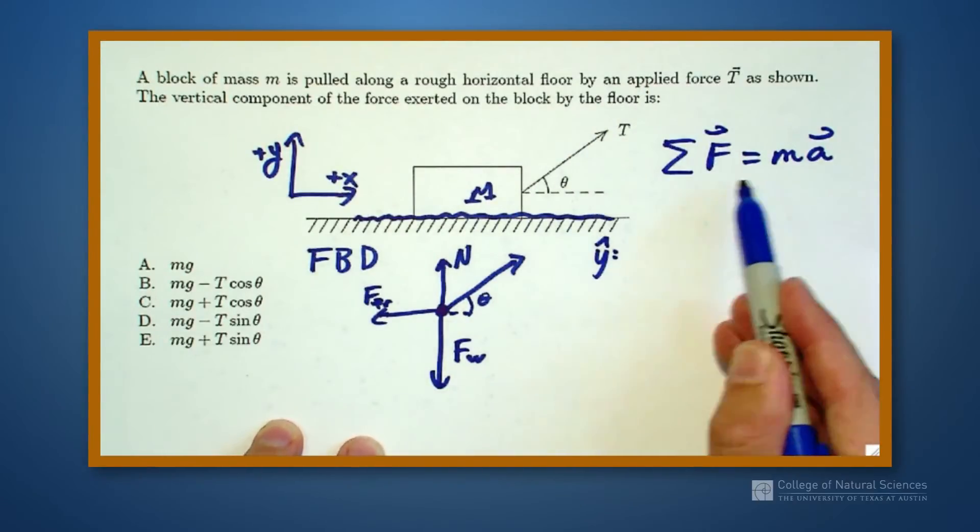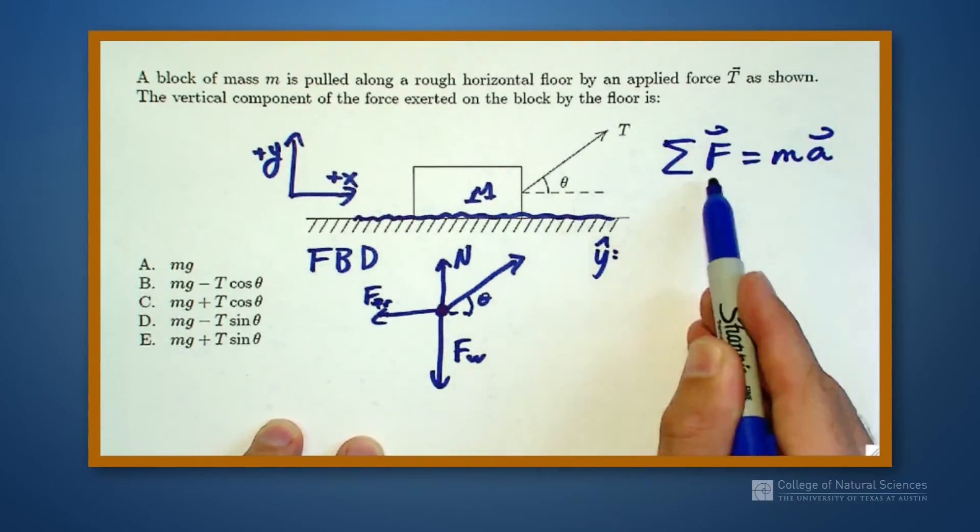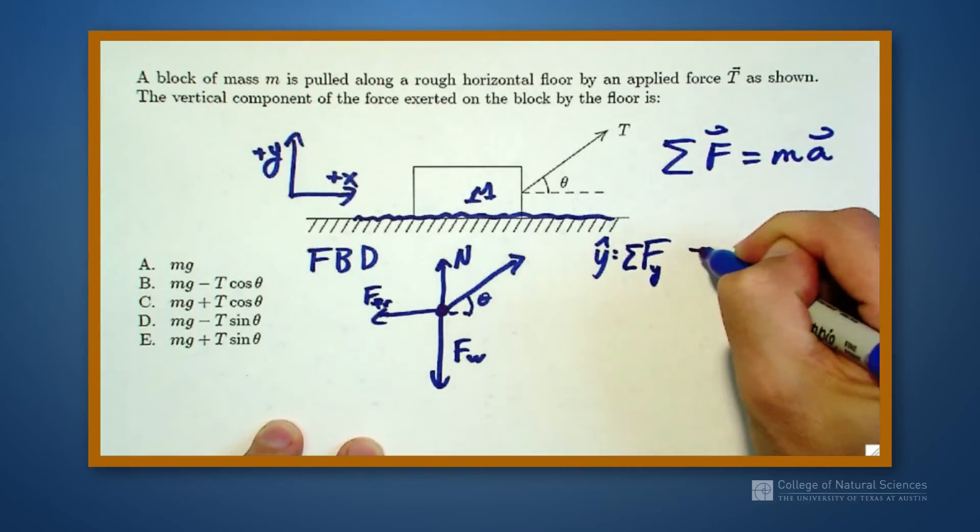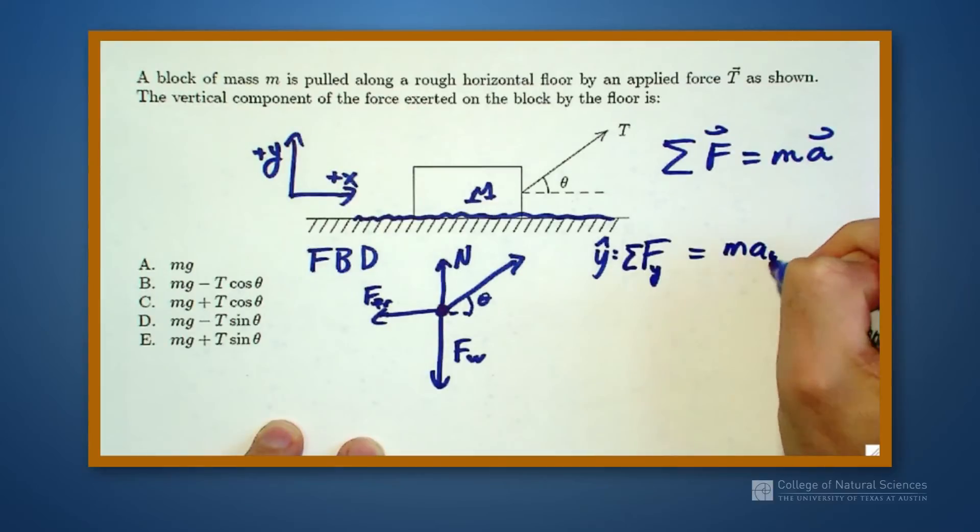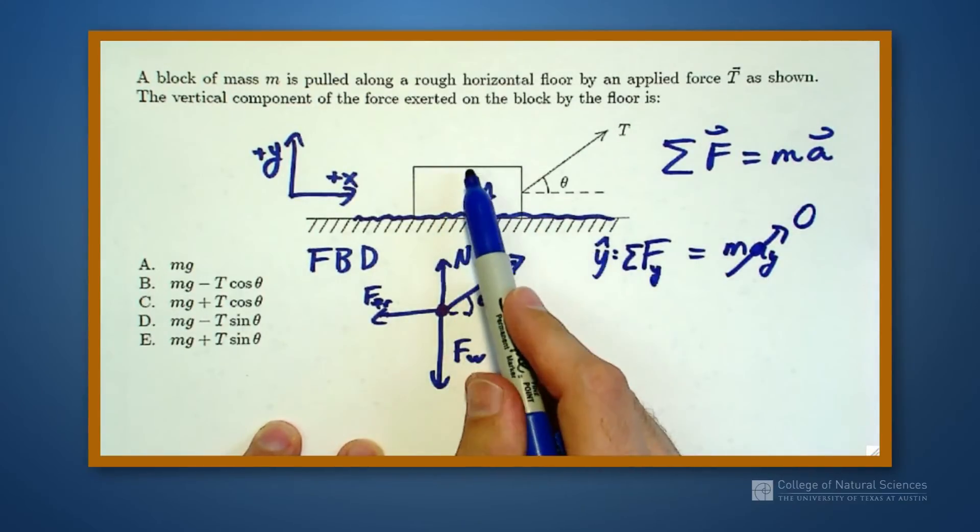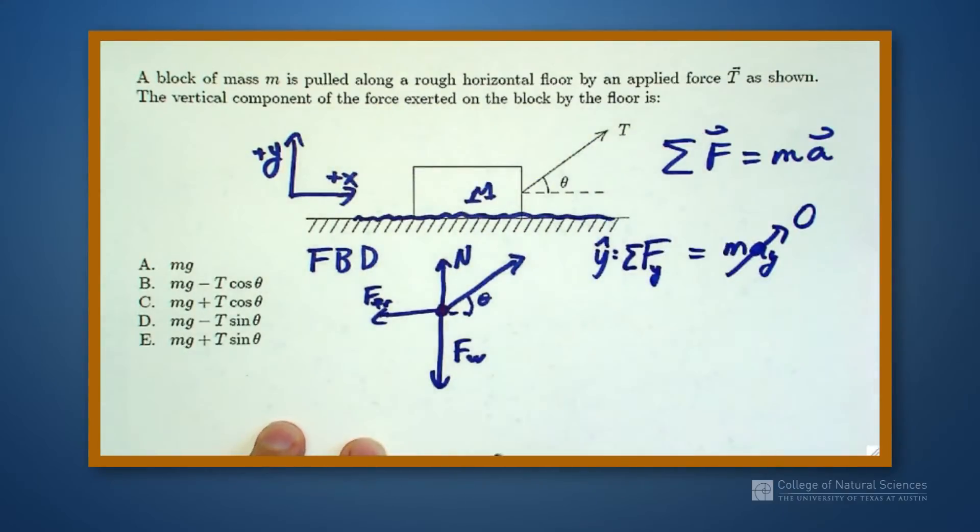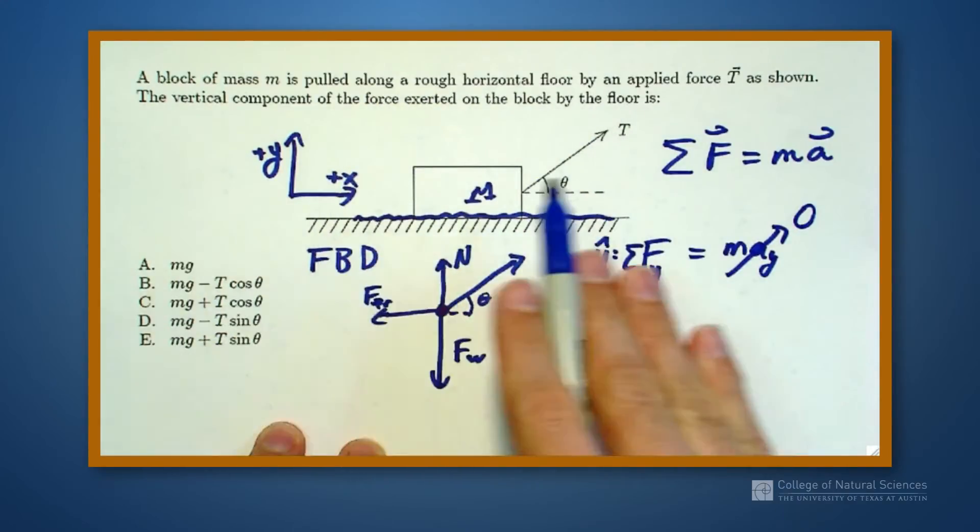So I'm using Newton's second law. It says that a net force gives us an acceleration, or our net force in the y direction gives us an acceleration in the y direction. And this is actually how we're going to solve this problem, because we know that the acceleration in the y direction is zero. It's not being lifted off the floor, it's not falling through the floor, it's being pulled along the horizontal floor, which means it's just coasting along.